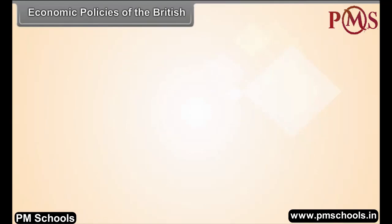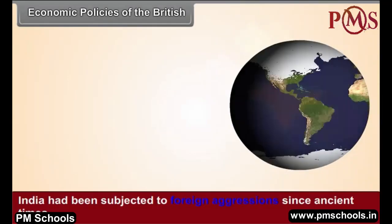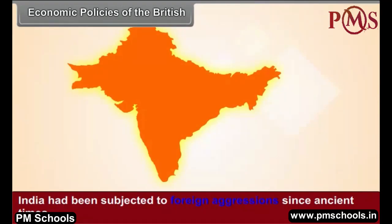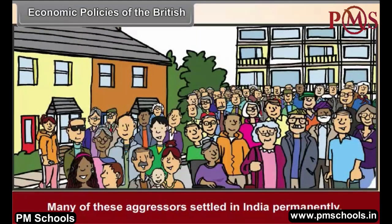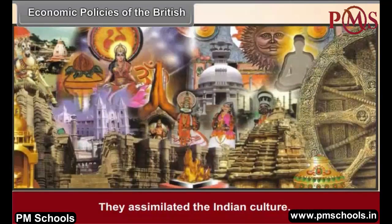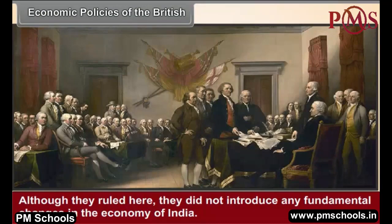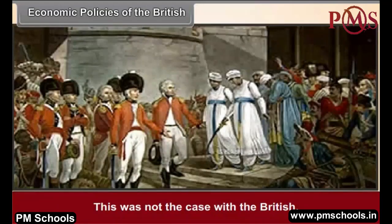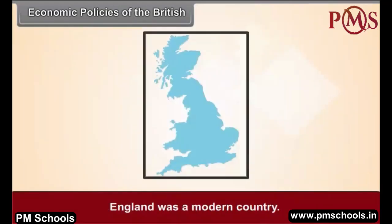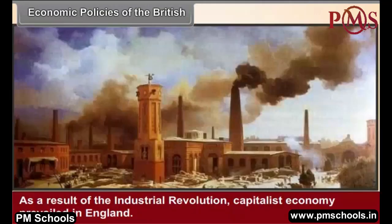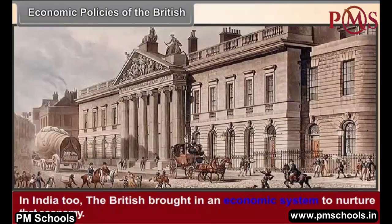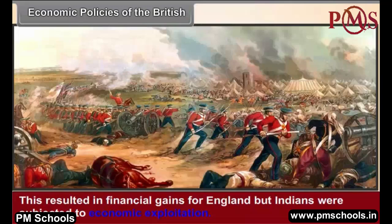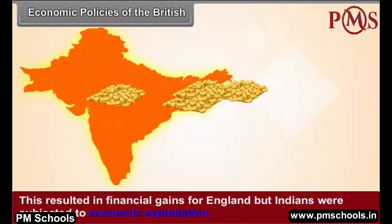India had been subjected to foreign aggressions since ancient times, and many aggressors settled permanently, assimilating Indian culture without introducing fundamental changes in the economy. This was not the case with the British. England was a modern country, and as a result of the Industrial Revolution, capitalist economy prevailed. The British brought in an economic system that resulted in financial gains for England but subjected Indians to economic exploitation.